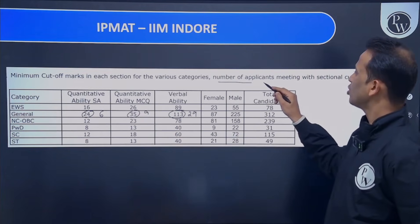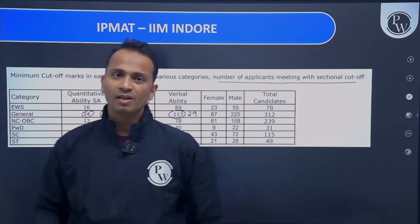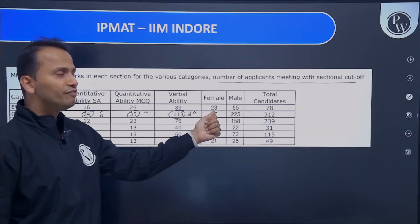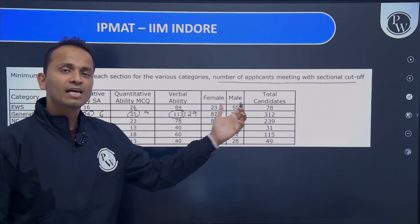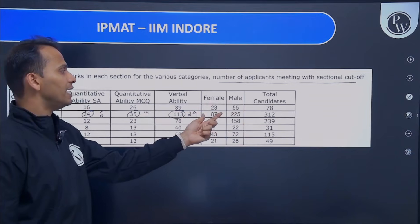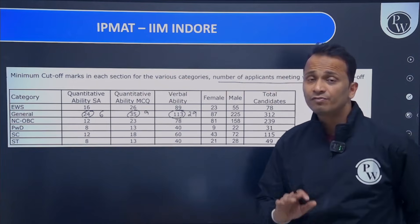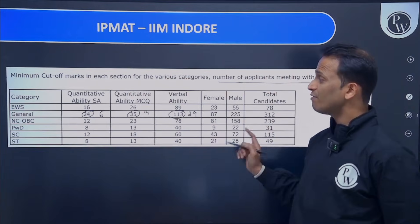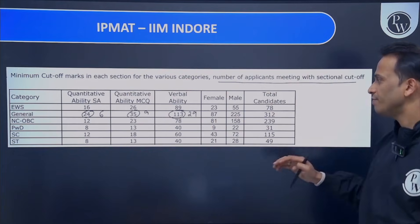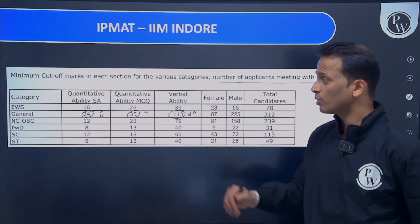Next is the number of applicants meeting these sectional cut-offs, given male and female-wise. In the EWS category, 23 females and 55 males cleared all three sectional cut-offs. In the general category, the numbers are 87 females and 225 males — a total of 312 candidates cleared all three sectional cut-offs.